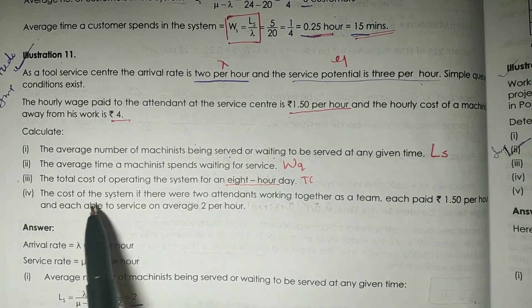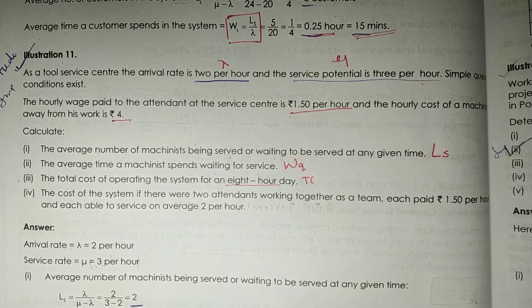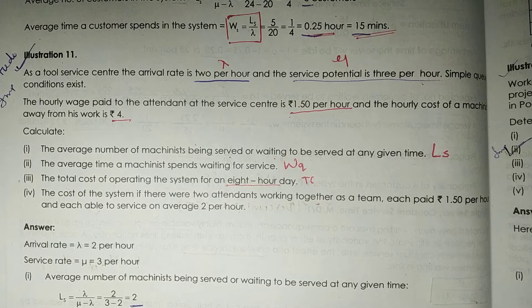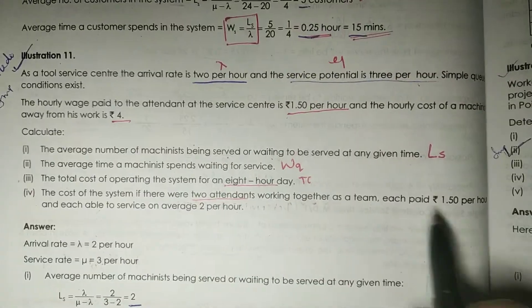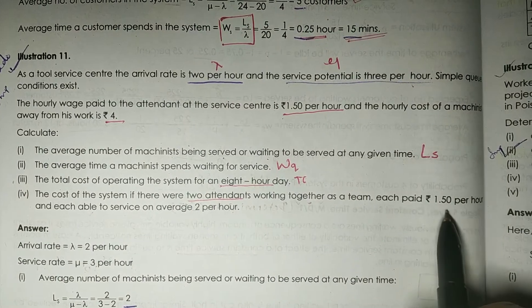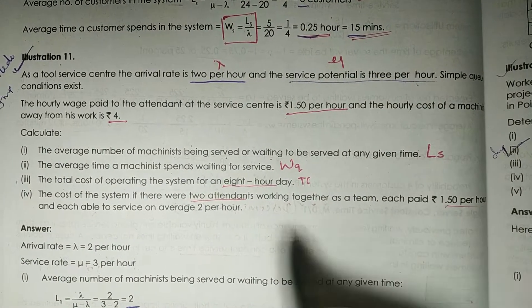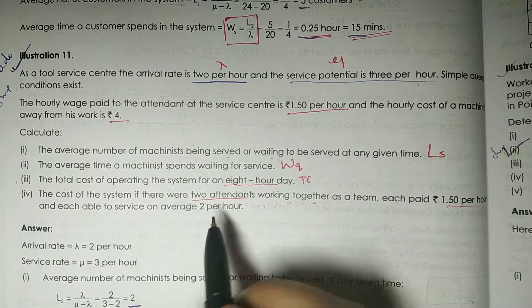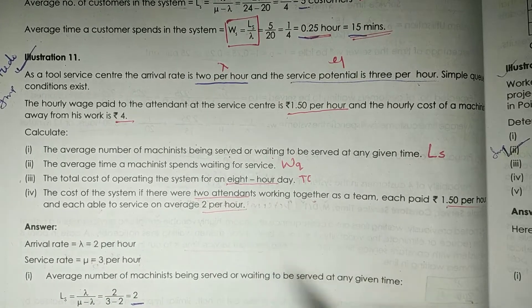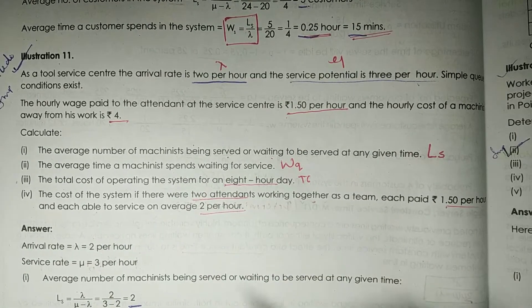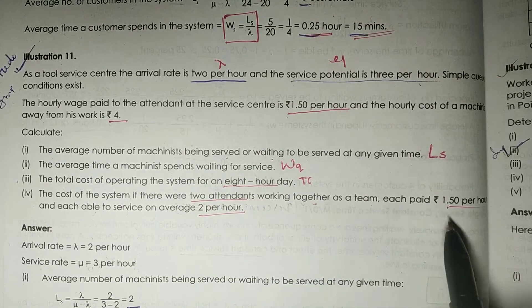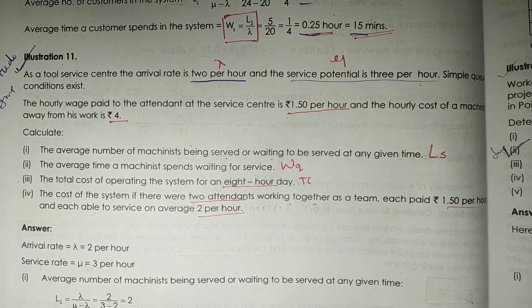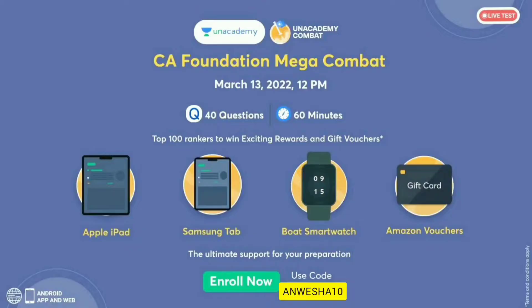The last thing that has been asked is the cost of the system if there were two attendants working together as a team, each paid 1.50 per hour, and each able to service on average 2 per hour. Before starting the solution, I'd like you to know about the CA Foundation mega combat.